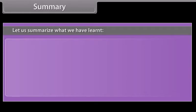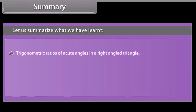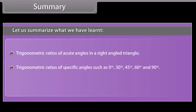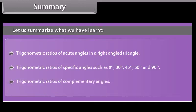Summary: In this lesson we have learned about trigonometric ratios of acute angles in a right-angled triangle, trigonometric ratios of specific angles such as 0°, 30°, 45°, 60°, and 90°, and trigonometric ratios of complementary angles.